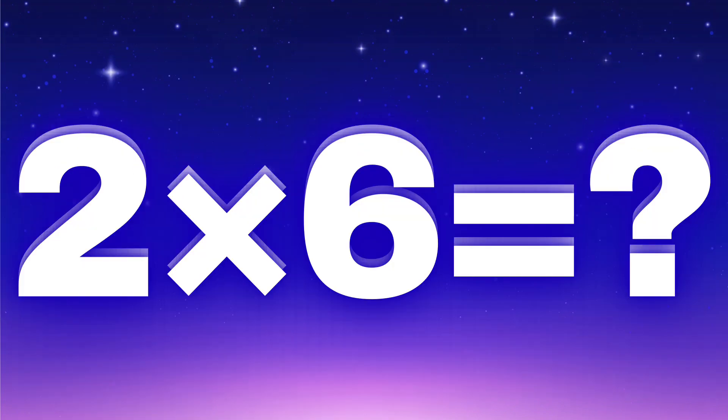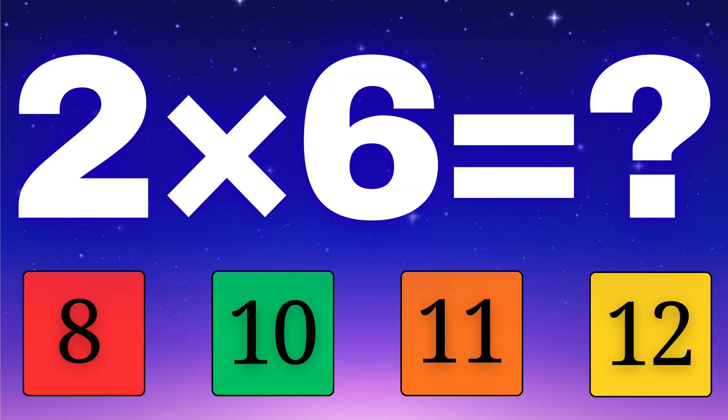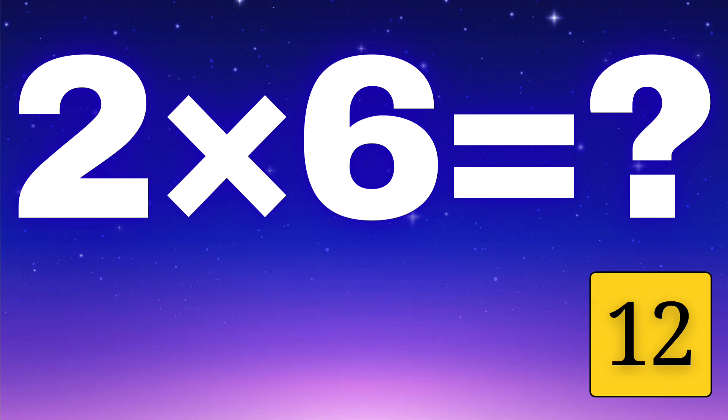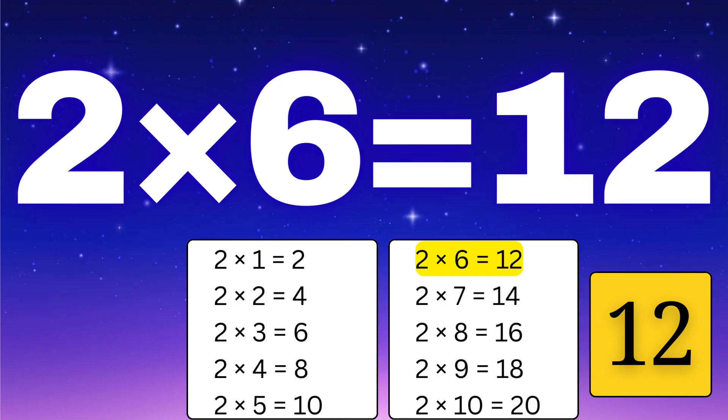Let's try the next one — what is two times six? Let's check the options: is it eight, ten, eleven, or maybe twelve? Think carefully. The correct answer is twelve. Excellent work — two times six equals twelve.